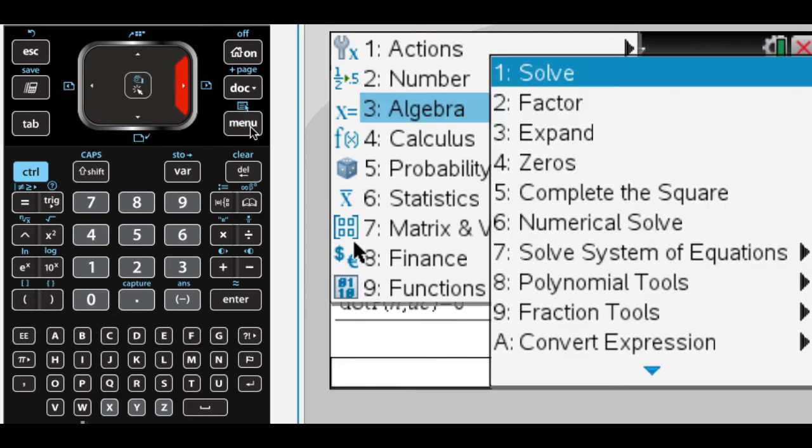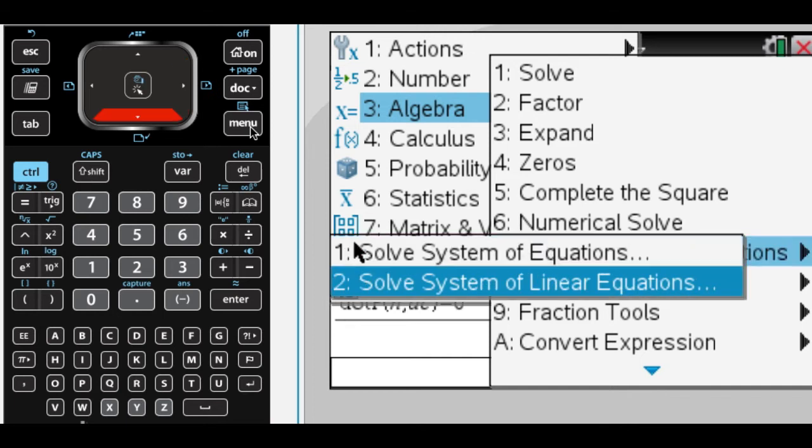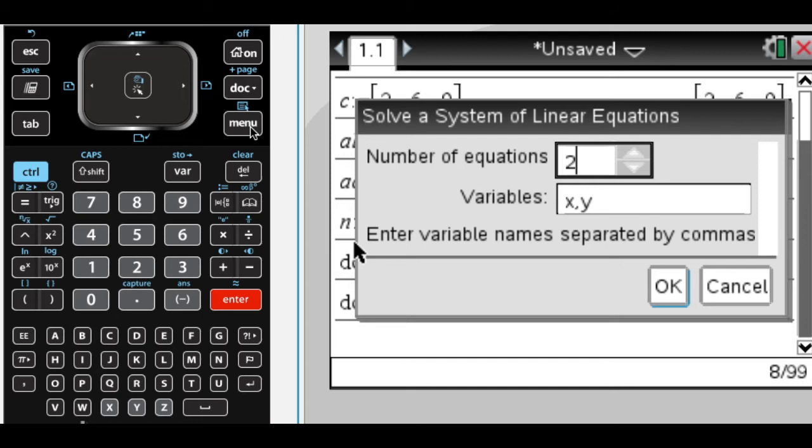So I will do this as if I did not have a CAS. Menu, and then Algebra, and then Solve. We want System of Linear Equations since we're pretending we don't have a CAS.